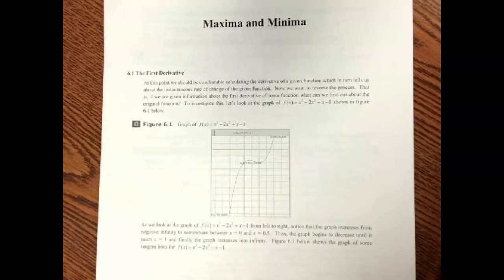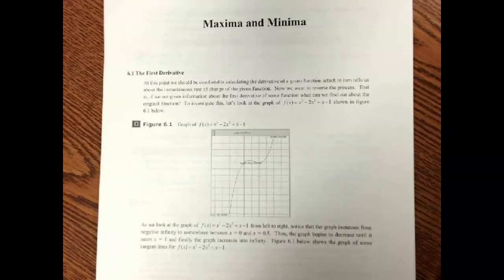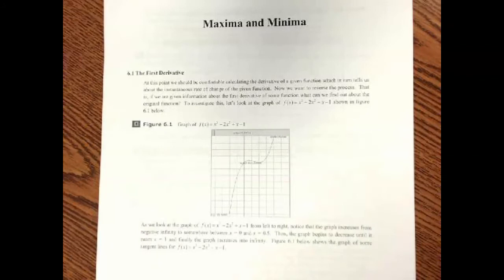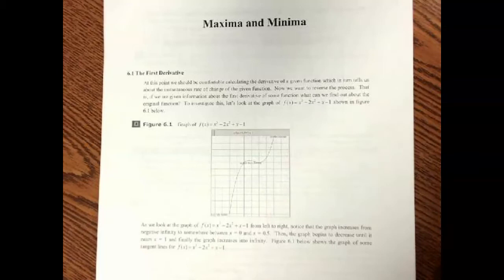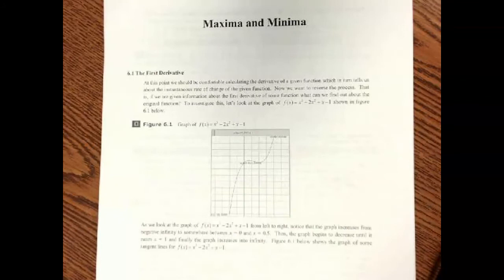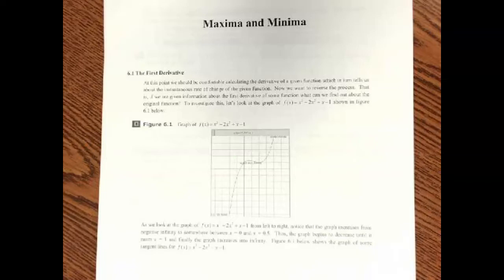Today we're going to get into extrema — in other words, maximums and minimums. You should have seen all that in pre-cal last year. This is really just going to be a much faster way to identify where the maximums are without being totally dependent on a calculator. We're going to figure out when a function is increasing, decreasing, or constant, and then use that to find relative extrema — that process is called the first derivative test.